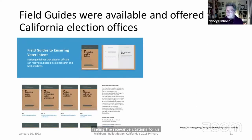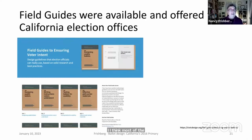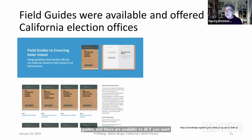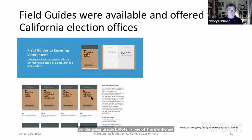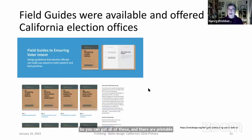The Center for Civic Design had already published their first 10 field guides by this time, covering topics like designing usable ballots, writing instructions voters will understand, testing ballots for usability, and effective poll worker materials. These are available online as printable PDFs and are intended to be accessible to all election officials.